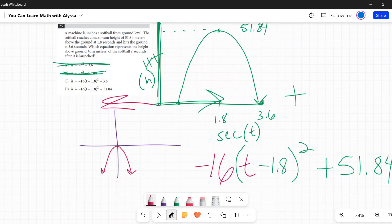And what do we have? We have minus 1.8 squared minus 3.6? No, that does not match. And ding ding ding, there's our answer: negative 16 times (t minus 1.8) squared plus 51.84. D is my answer.